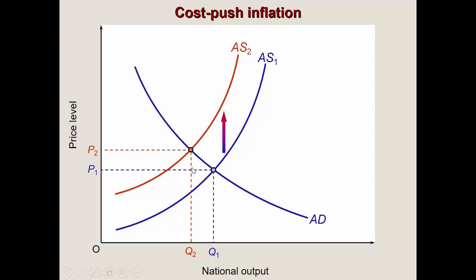Cost-push inflation can be one-off: a single rise in costs, then the price level stabilizes and the economy continues from a new equilibrium. For example, a one-time increase in taxes shifts the aggregate supply curve once. But it could also be continuing — costs could keep rising, continuously shifting aggregate supply to the left over time, usually due to external factors or policy implementations. The same applies to demand: a one-off shift in demand is possible, but the demand curve could also continue moving to the right.